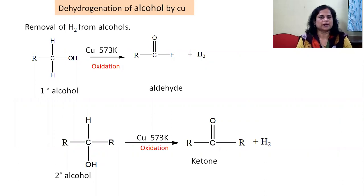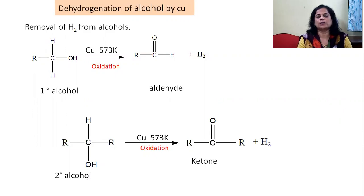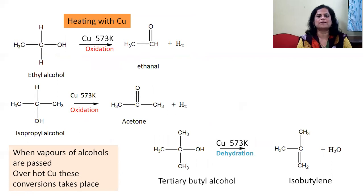Similar conversions are carried out using a copper container, where dehydrogenation reaction takes place — removal of H2 from alcohol forms carbonyl compounds. Primary alcohol is converted to aldehyde and secondary alcohol to ketone, but in the presence of a copper container at 573 Kelvin, by removal of H2, formation of aldehydes takes place. So these reactions convert alcohols into aldehydes and ketones using copper.